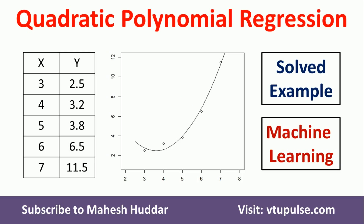Welcome back. In this video, I will discuss how to apply quadratic polynomial regression to the given data set to draw a polynomial curve. This is solved example number one. The link for other examples is given in the description below. This is the data set given to us — we have been given five data points where x is the independent variable and y is the dependent variable.